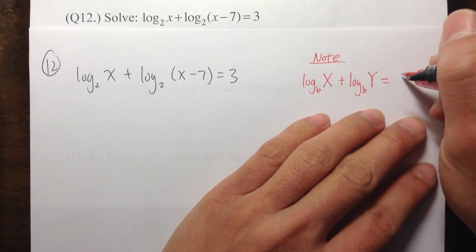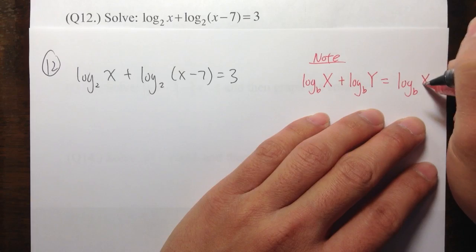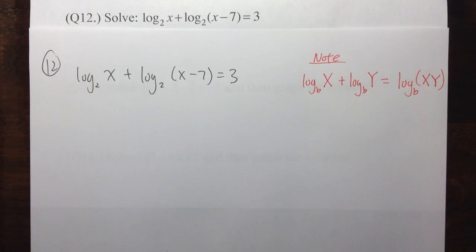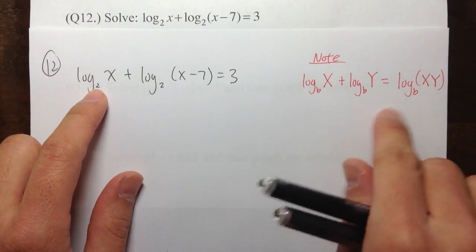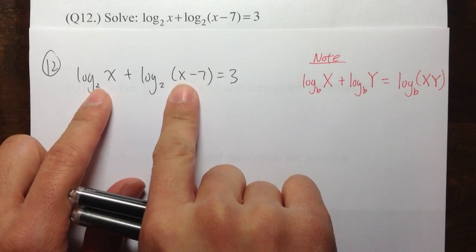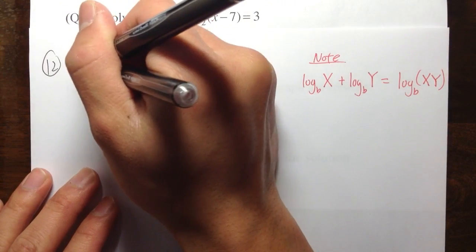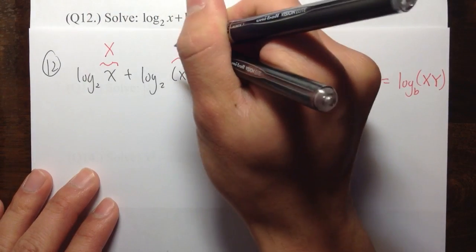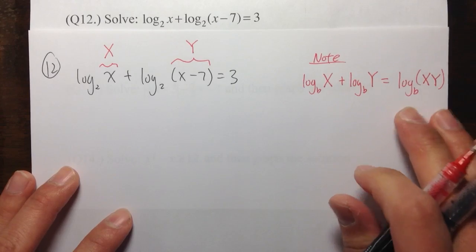So in this situation, we can write this as a single log b, and then the inside will be just X times Y. Capital X times capital Y. And that's exactly what's going on right here, and that's what we need. This is what we need to condense these two logs into one single logarithm. The first step, applying this property,